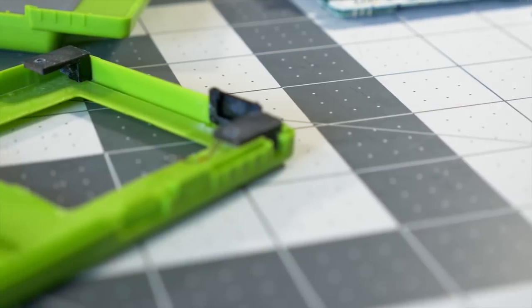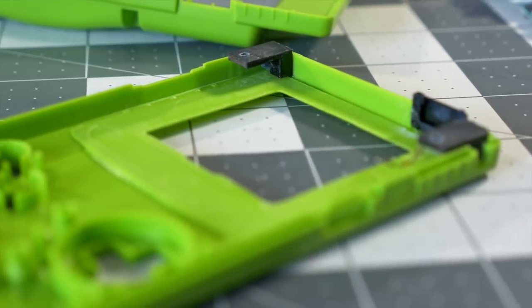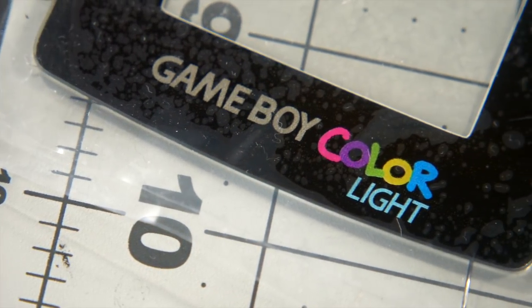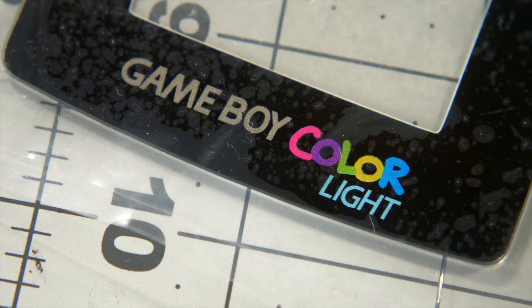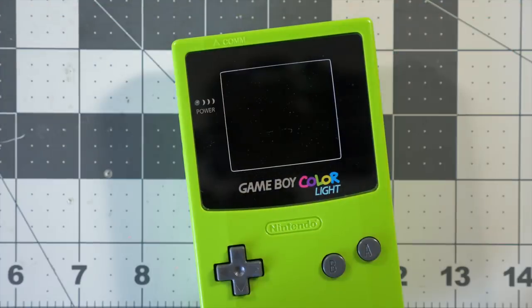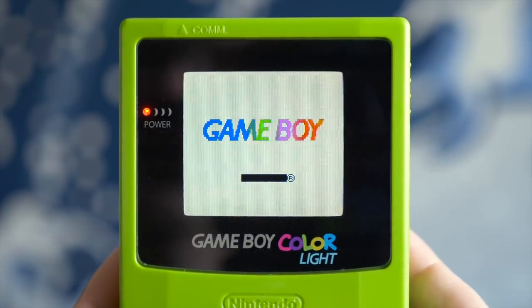The shell also came with 3D-printed brackets and a couple of really nice extras. A custom rear label and glass screen cover calling the console the Game Boy Color Light. That cover is even sized for the exact image area of the replacement screen, so masking off the display itself isn't necessary.